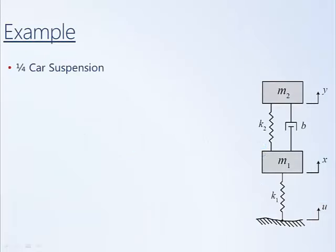We will now go through some examples demonstrating how to apply the approach that we just put forth for modeling mechanical systems. The first example that we'll do is a translational system, a quarter car suspension.